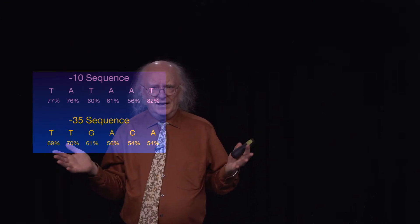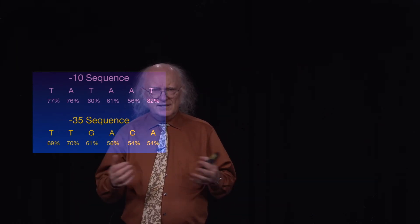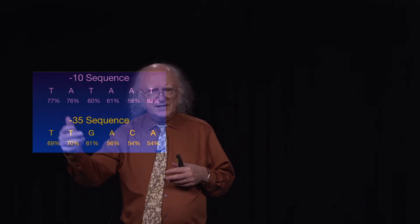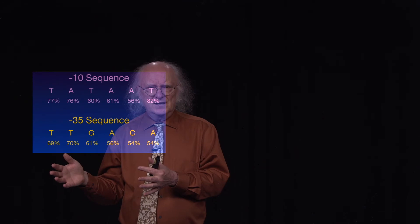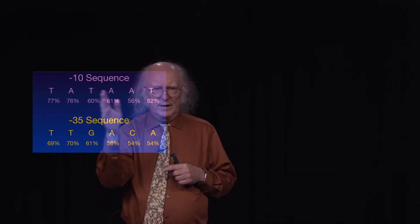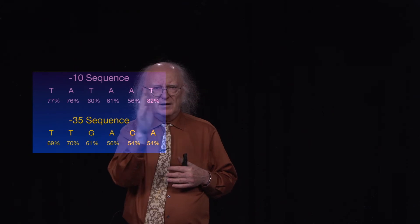Why aren't they all the same? It turns out that the reason these sequences aren't all the same is that they function in different ways. The function of these consensus sequences — what we call the promoter — is this region of conserved sequence. People ask what's the difference between a conserved sequence and a consensus sequence; I use the terms interchangeably. This consensus sequence is conserved at this location, meaning it's very commonly found, or some variant of it is very commonly found, next to a gene. Similarly, the consensus sequence at the minus 35 is also conserved and commonly found at the minus 35 position from a gene.